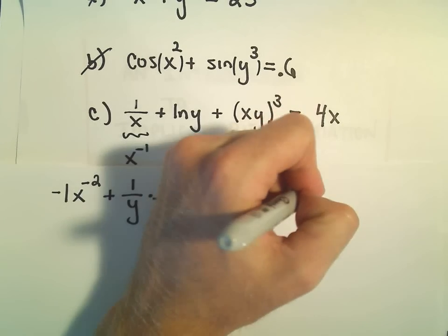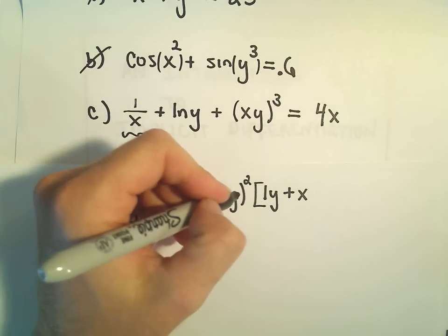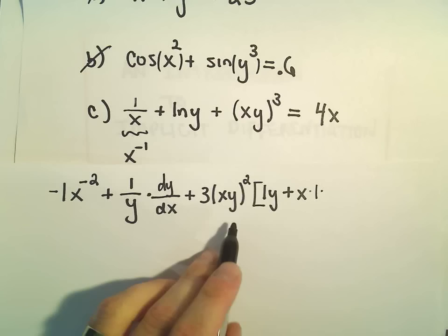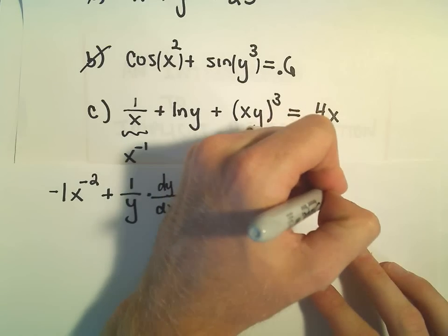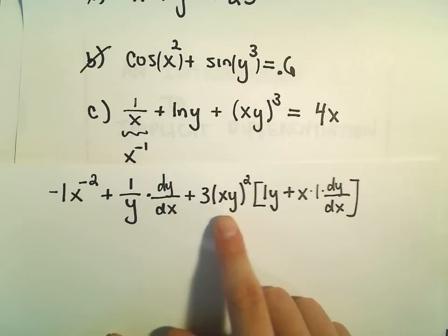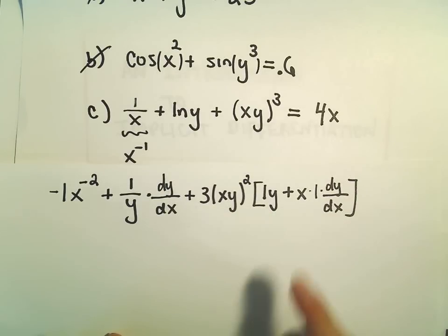We'll leave the x alone and then when we take the derivative of y, we'll just get 1, but then again we're taking the derivative of the y part, so we have to tack on our dy dx term. So again be careful. We have to use the product rule on the inside, again using our implicit differentiation.